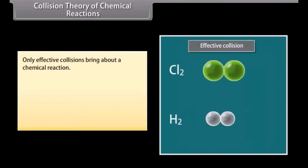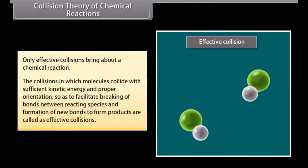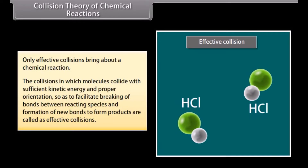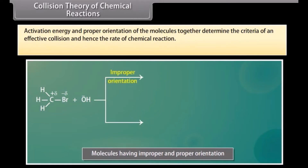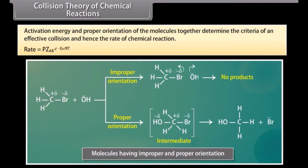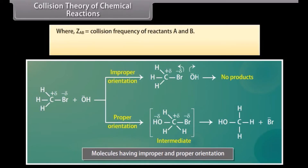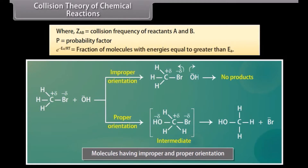Collision theory of chemical reactions. Only effective collisions bring about a chemical reaction. Collisions in which molecules collide with sufficient kinetic energy and proper orientation, so as to facilitate breaking of bonds between reacting species and formation of new bonds to form products, are called effective collisions. Activation energy and proper orientation of the molecules together determine the criteria of an effective collision and hence the rate of chemical reaction. Rate = P·Z_AB·e^(minus Ea/RT), where Z_AB is the collision frequency of reactants A and B, P is the probability factor, and e^(minus Ea/RT) is the fraction of molecules with energies equal to or greater than Ea.